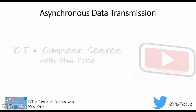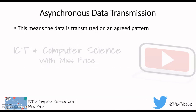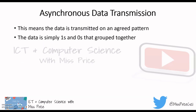So firstly we're going to look at asynchronous data transmission. This is how data transmission was made possible to begin with. This means data is transmitted simply on an agreed pattern, so there has to be an agreement between the two computers. The data is simply ones and zeros — when I say 'the data,' think of a bunch of ones and zeros — and these ones and zeros have to be grouped together and then sent.